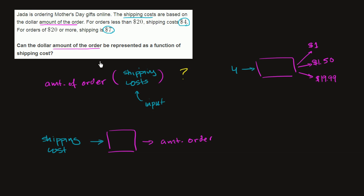We could do a similar thing if we inputted 7 into this relationship. If I input 7 into this relationship that we're trying to test whether it's a function, if 7 is the shipping cost, then the order we just know is over $20, $20 or more.